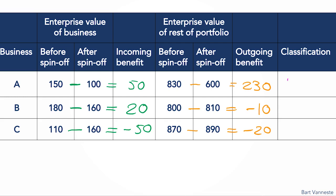The last step is to classify. A is a fit, because both incoming and outgoing benefits are positive. B is a taker, because the incoming benefit is greater than the outgoing costs. C is a misfit, because it has both incoming and outgoing costs. Thus, based on this classification, we would be keen to invest in A and B, but not in C. If our corporate strategy is based on synergies, then synergies should be central in our resource allocation. The Synergistic Portfolio Framework can help you keep track of businesses with synergies and those without.